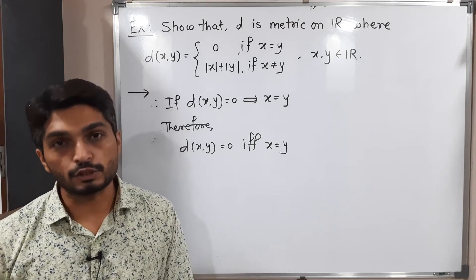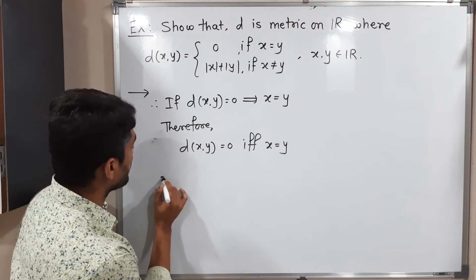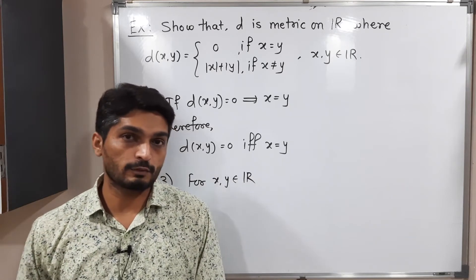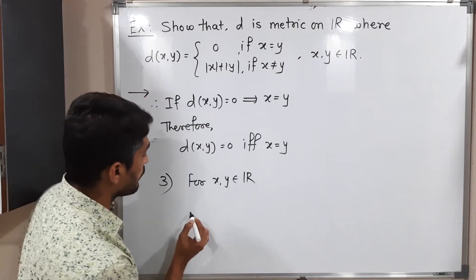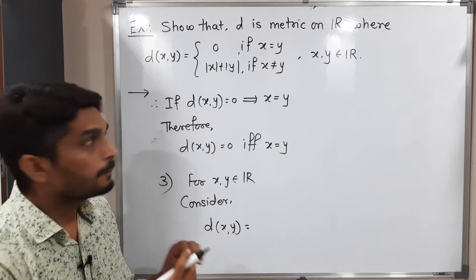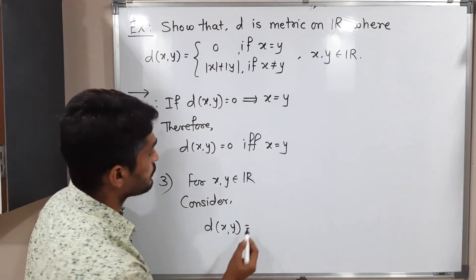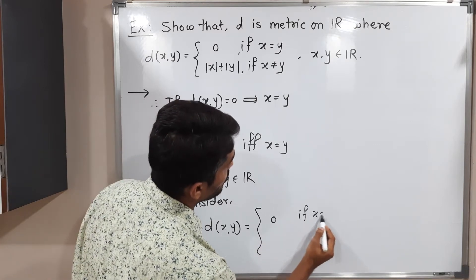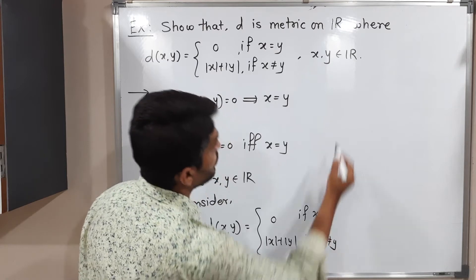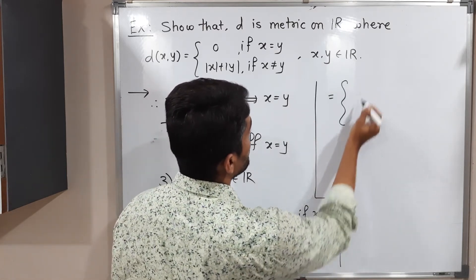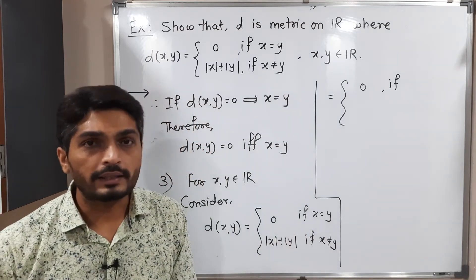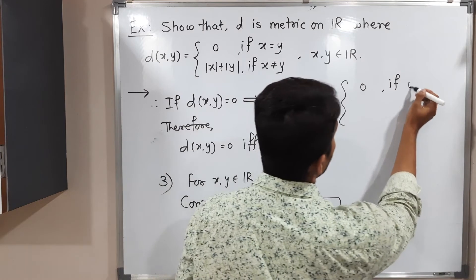Now for the third condition — symmetry — we must prove D(X,Y) = D(Y,X) for X, Y ∈ ℝ. Consider D(X,Y). By definition: D(X,Y) = 0 if X = Y, and |X| + |Y| if X ≠ Y. We make some modifications: if X = Y, that is the same as Y = X.